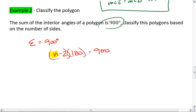Now we want to solve for n. We divide both sides by 180. We get n minus 2 equals 900 divided by 180, which is 5.